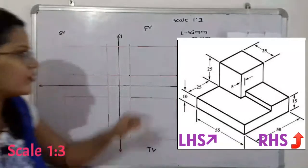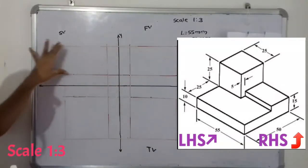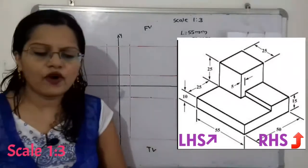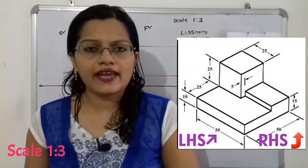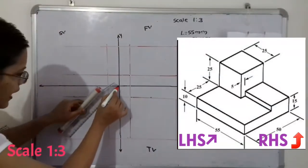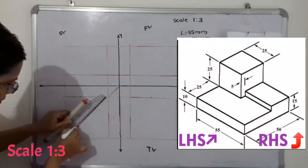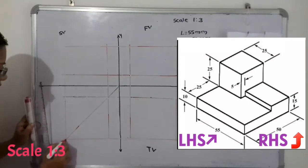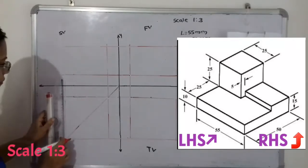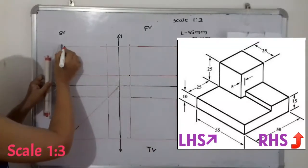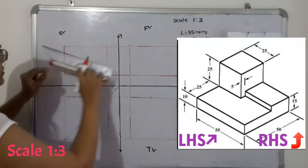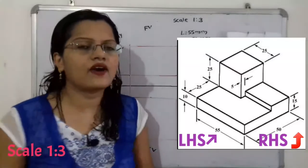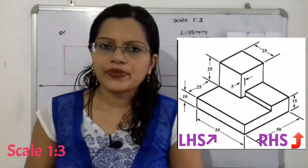For the side view, we take horizontal projections from the front view and vertical projections from the top view. To transfer the width from the top view to the side view, we draw a line at 45 degrees. We draw a horizontal projection from the top view to this 45-degree inclined line, then draw a vertical line at the point of intersection. Where the vertical projection from the top view and horizontal projection from the front view meet, that defines the outline of the side view.